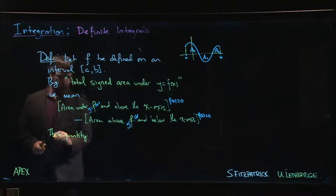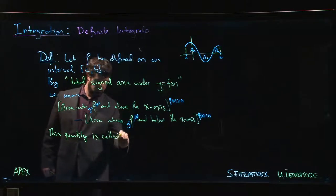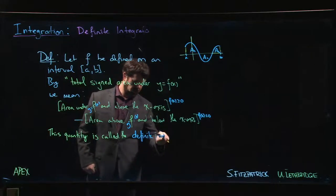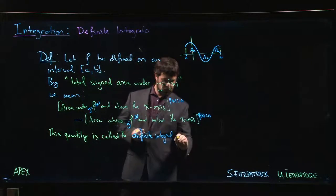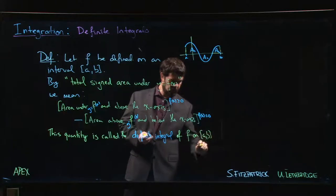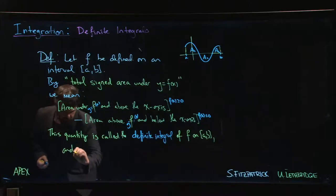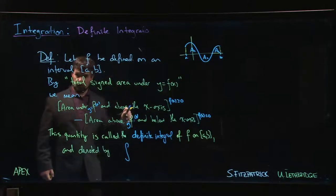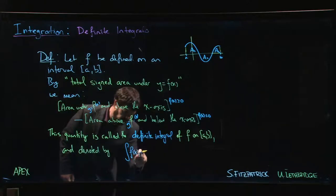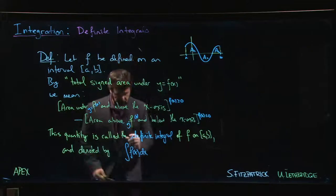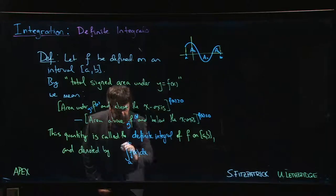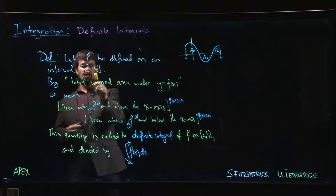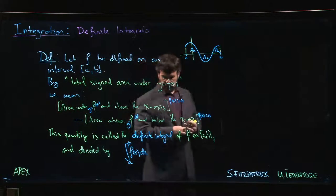This quantity is called the definite integral of f on this interval from a to b. And let's give the notation. It's denoted by the integral of f of x dx, and you'll notice the same symbol that we use for indefinite integrals. The only difference is that we put in what are called the bounds of integration: a at the bottom, b at the top. So sometimes we'll talk about the lower bound and the upper bound, but these are really just the endpoints of the interval.